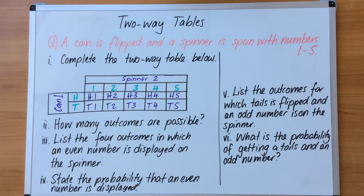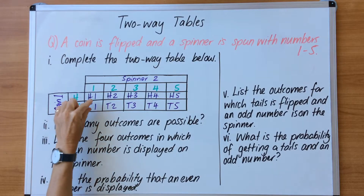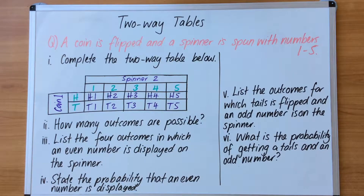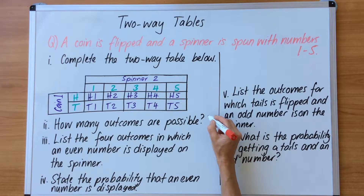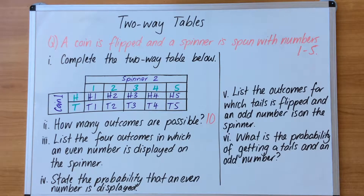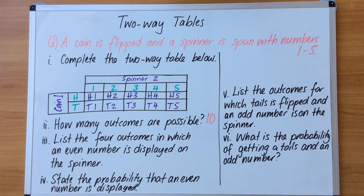Now I have all of my outcomes. The first question says how many outcomes are possible? If you count all the outcomes written here in purple — two, four, six, eight, ten — there are ten outcomes. When answering probability questions around this table, the number ten will most commonly be the denominator in the fraction. That does change when doing a slightly different two-way table involving the word 'given', which is coming up.